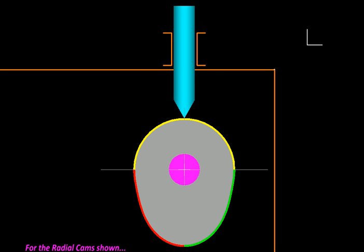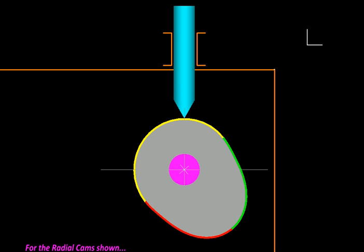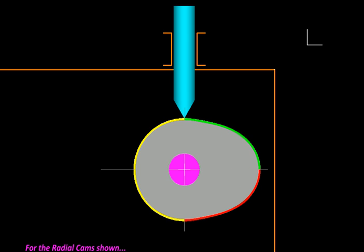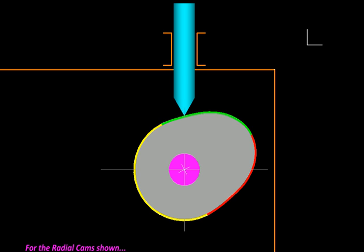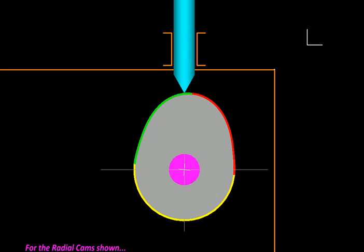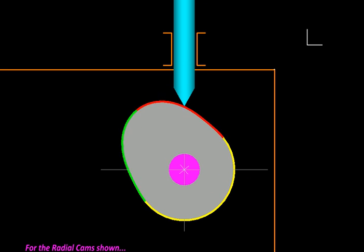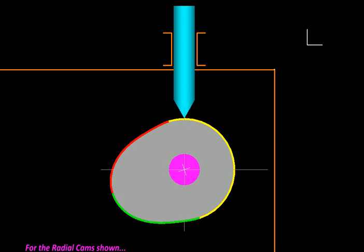These three parts of the cam surface perform three different functions. The yellow portion keeps it in one place. This is called as dwell because the follower stays, dwells in one position. The green portion raises the follower so it is called the rise and the red portion brings it back so it is called the return portion.